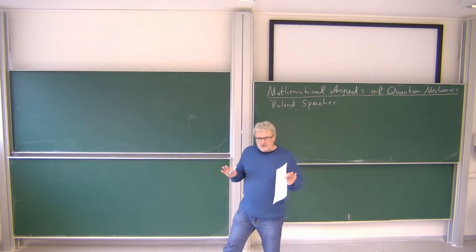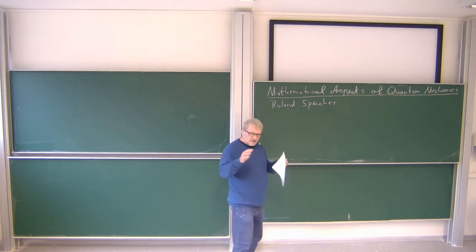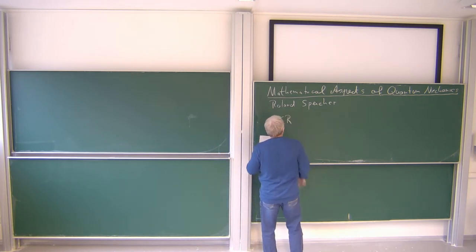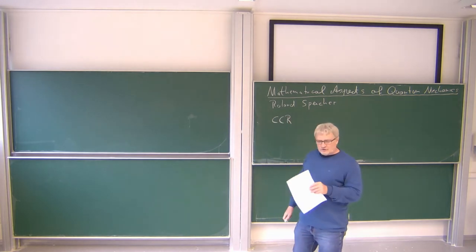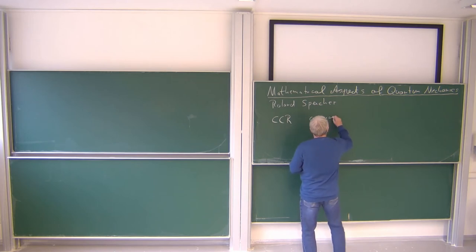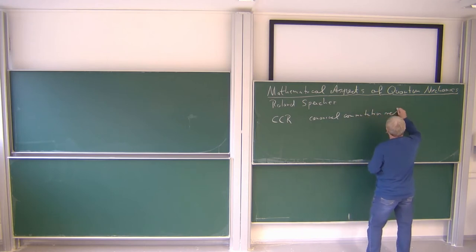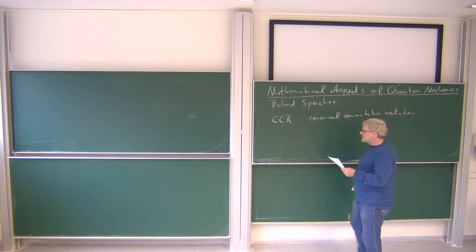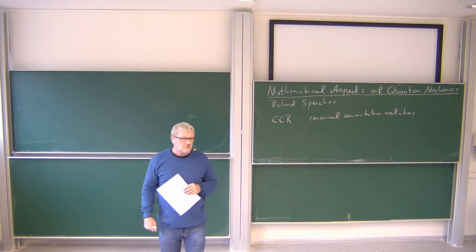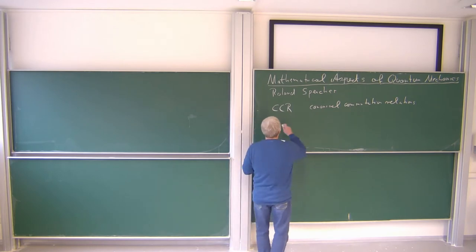I want now to give an introduction to what I will cover in this course — just a general survey of what we will treat. The course centers around the canonical commutation relations, CCR. This is the basic mathematical relation for describing quantum mechanics.